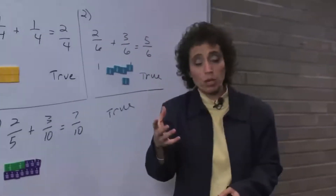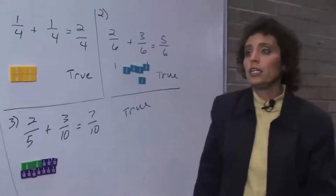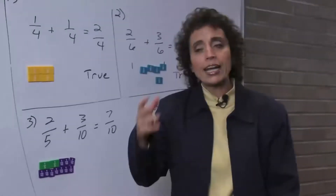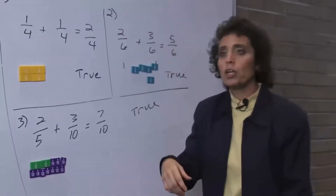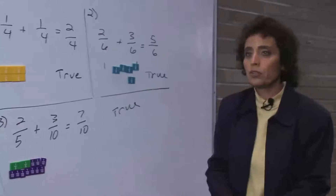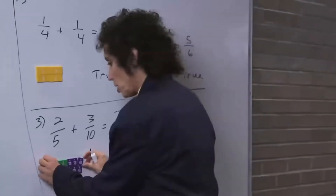If they're the same size, it's easy to add and subtract them. It's when they're different sizes that you have a problem. But when they're the same size, they are like terms. So let's take a look at these next problems and see if we can answer them. It says combine and express your answer in simplest form. Use the manipulatives to verify your answer.